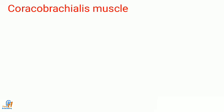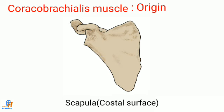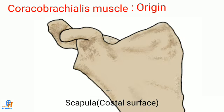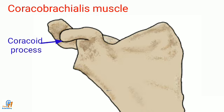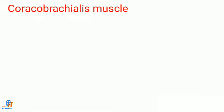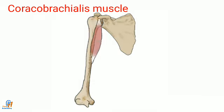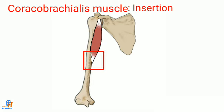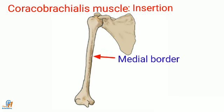The coracobrachialis muscle originates with the short head of biceps from the tip of the coracoid process of the scapula. The muscle goes downward and is inserted by means of a flat tendon into an impression at the middle of the medial surface and border of the body of the humerus.